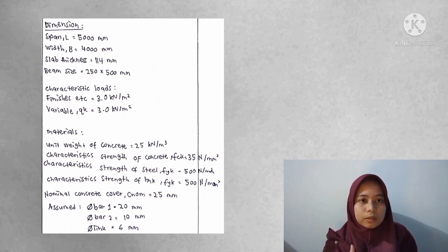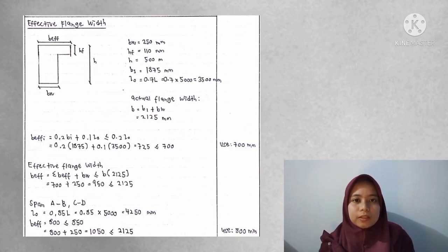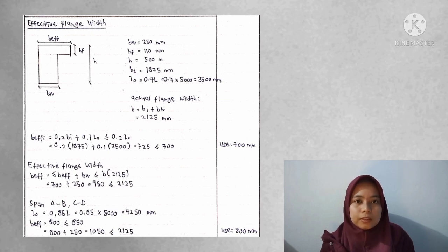For assumed bar sizes: bar 1 is 20 mm, bar 2 is 10 mm, and link is 6 mm. For effective flange width: BW is 250 mm, HF is 110 mm, H is 500 mm, B1 is 1,875 mm, and LO is 3,500 mm.